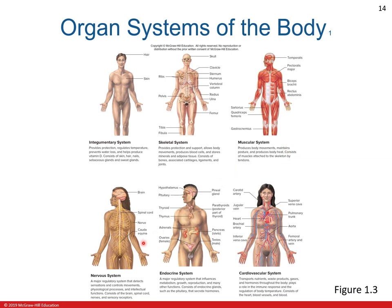Fourth would be the nervous system. It is a major regulatory system that detects sensations and controls movement, physiological responses, and intellectual actions. It consists of the brain, spinal cord, nerves, and sensory receptors. Another system is the endocrine system, which is a major regulatory system that influences metabolism, growth, reproduction, and many other functions.